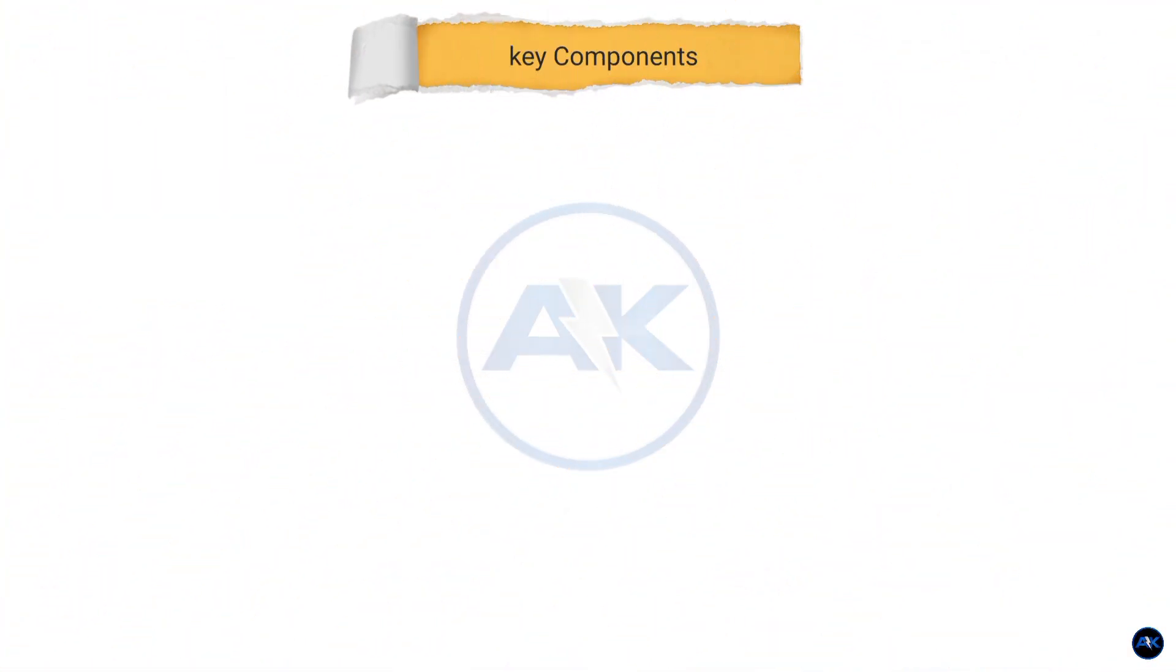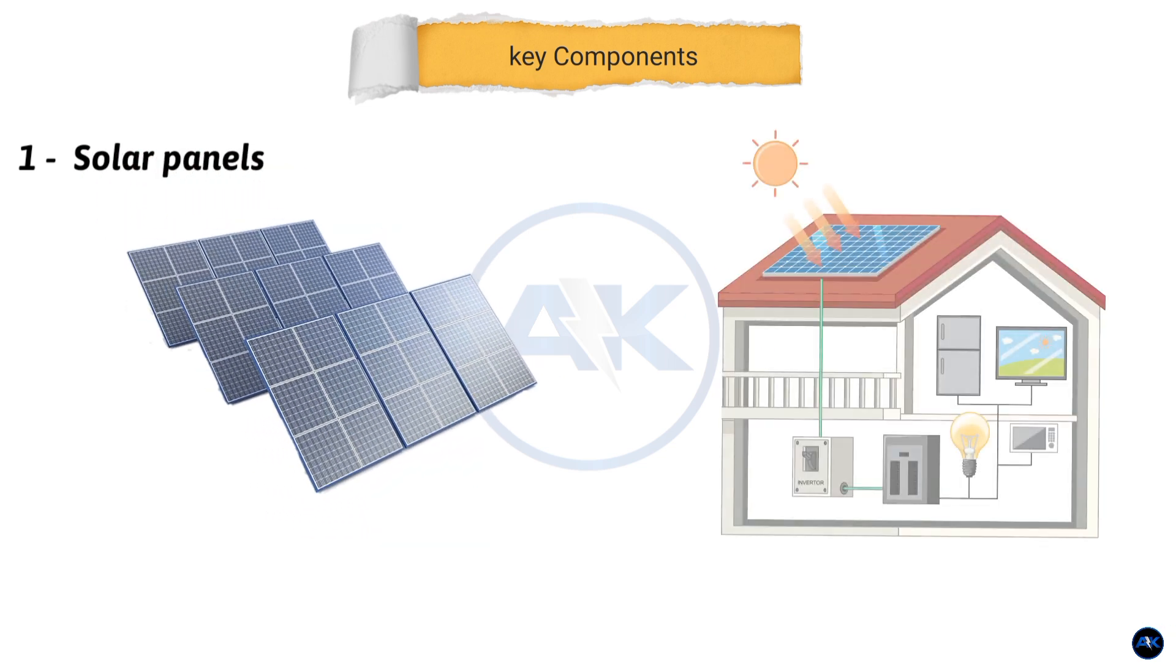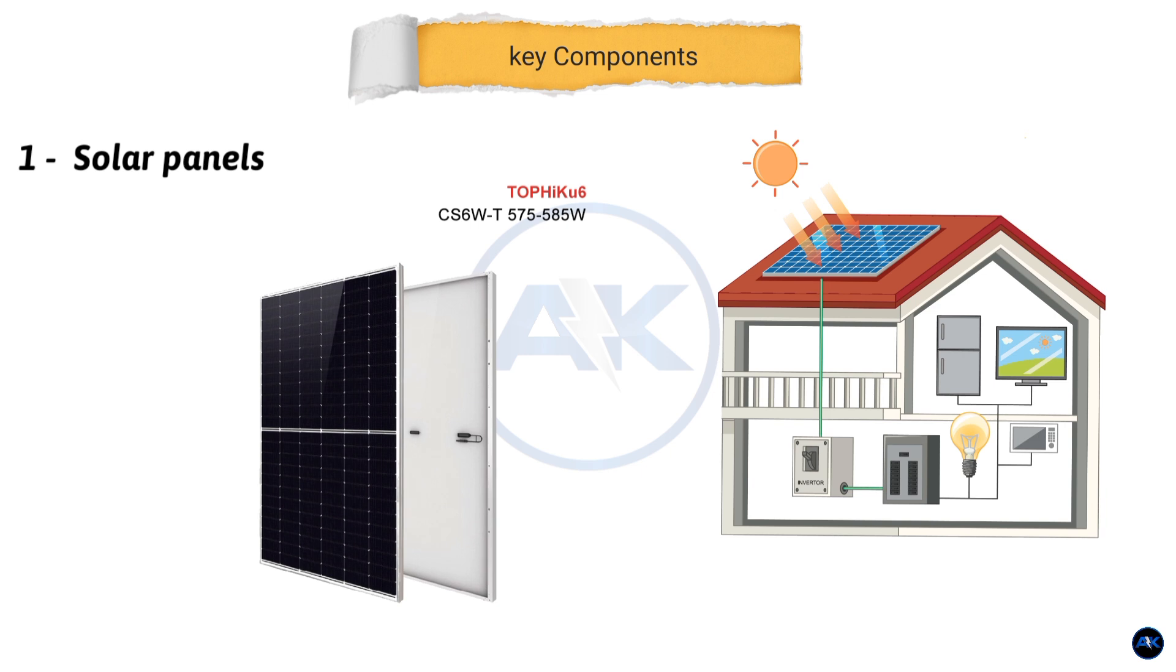Let's talk about the key components. First, solar panels. These are the heart of the system, converting sunlight into electricity. We'll be using Canadian Solar 24 number 580 Watt panels.